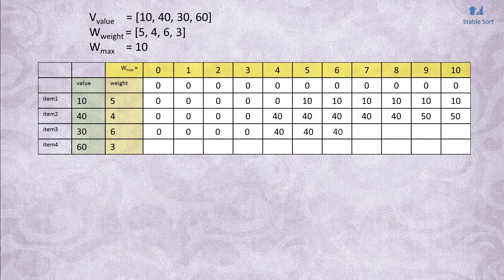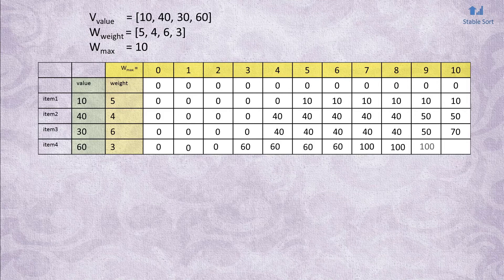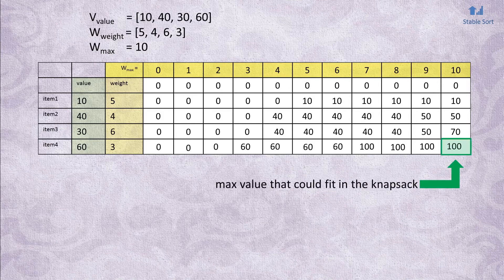When the algorithm completes filling out the table, the bottom right corner will contain the maximum value that could be fitted. OK, so now, how do we retrieve the actual set of items that were picked?